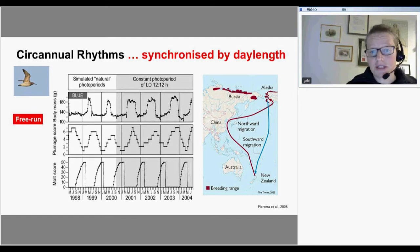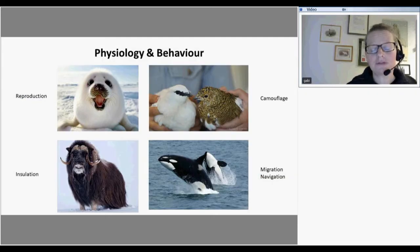These rhythms are synchronized by day length. So not just at what time the sun rises but how long does the day last. As opposed to the circadian rhythms that are synchronized by the on and offset of light. They control a lot of things. A lot of physiology, bodily changes, and also a lot of behavior. For example, reproduction in most animals happens seasonally.